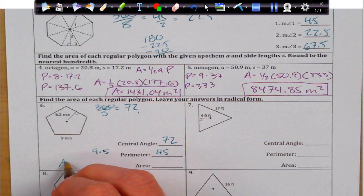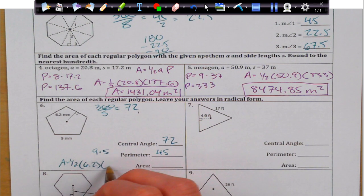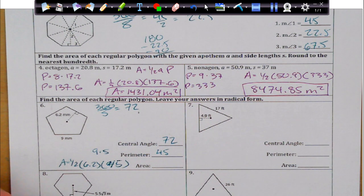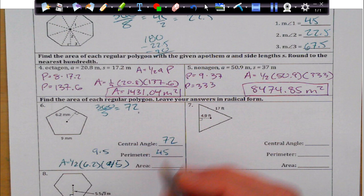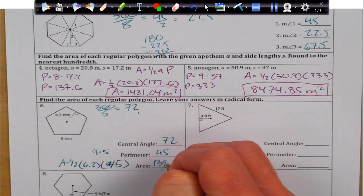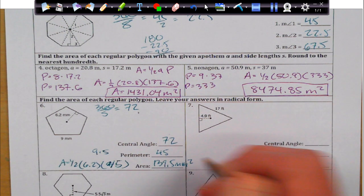And then the area is just 1 half of my apothem, 6.2, times my perimeter of 45. So, that's 45 times 6.2, and then divided by 2 is going to give us 139.5 square millimeters.